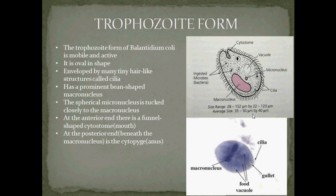The spherical micronucleus is tucked closely to the macronucleus, and at the anterior end is the funnel-shaped cytostome, which is technically the mouth. At the posterior end, which is beneath the macronucleus, is the cytopyge, which is actually where waste is discharged from the protozoan's body — a.k.a. the anus.